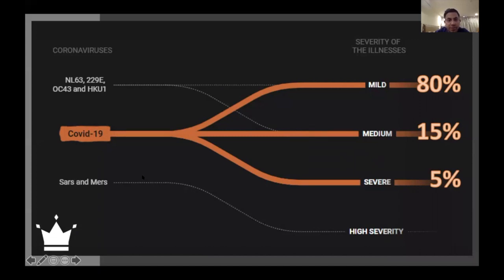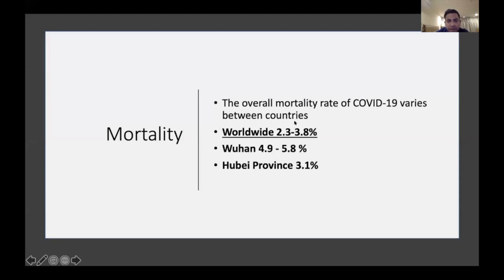The severity of COVID-19 varies widely. About 80 percent of patients are either asymptomatic or have very mild symptoms. Fifteen percent have moderate symptoms such as cough and shortness of breath, and 5 percent have severe symptoms requiring ICU admission. The worldwide mortality rate is about 2.3 to 3.8 percent. Wuhan had a higher mortality rate compared to the whole Hubei province, probably related to an overwhelmed healthcare system.